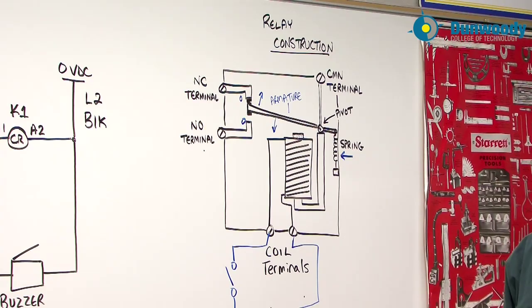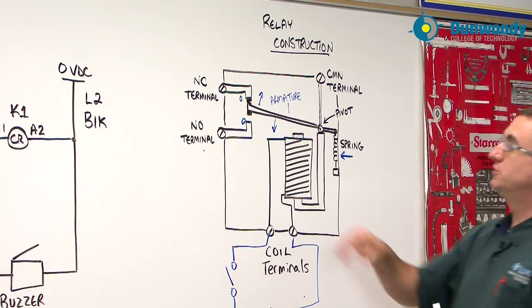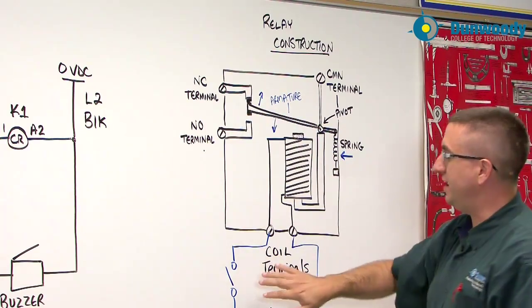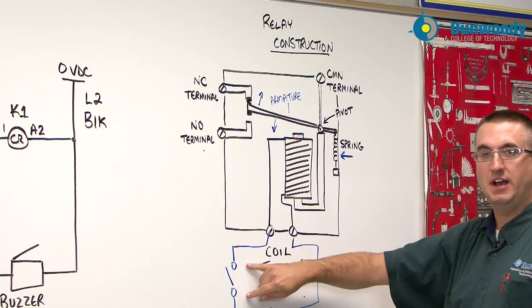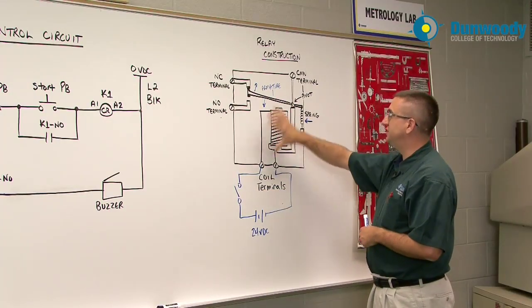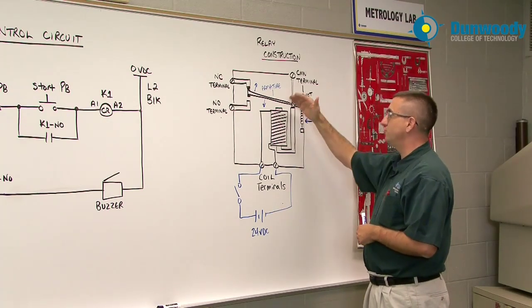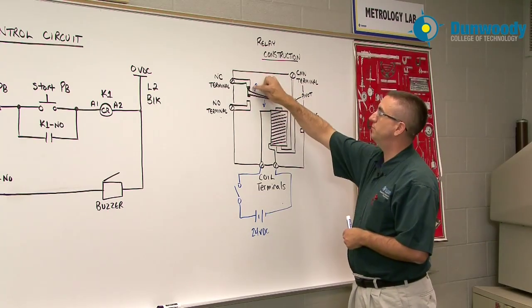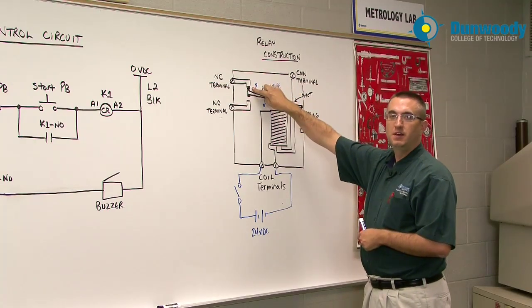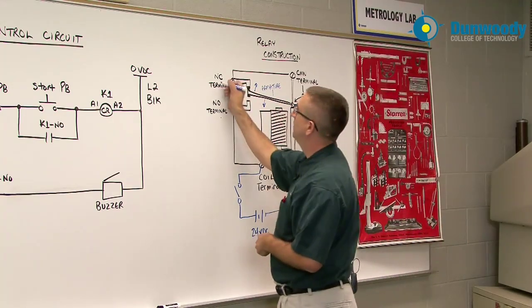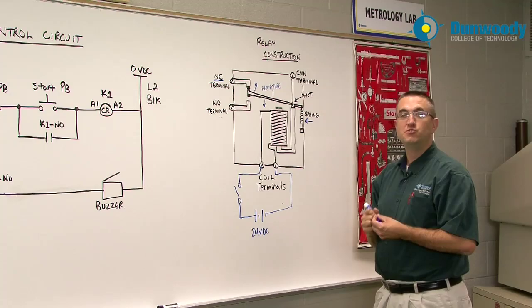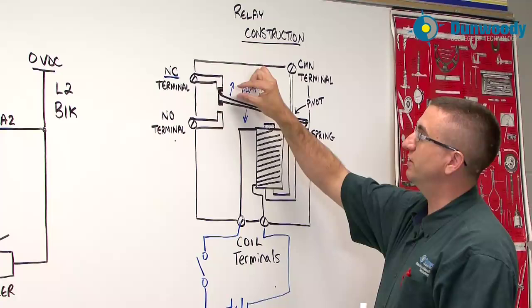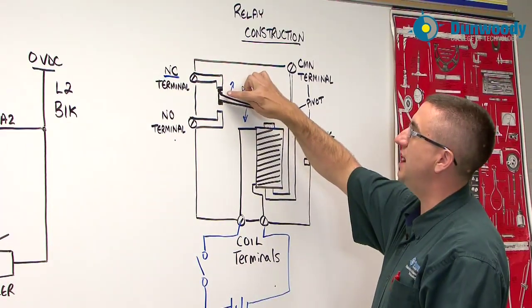These are what we call our normally open and normally closed contacts. So as I look at this drawing here, what I can see is right now my coil is de-energized. So the switch is off, the coil is de-energized, the spring is pulling on this. There's no magnetism to pull on the armature. And what happens is this armature flies up to the normally closed contact. And what normally closed means, this NC stands for normally closed. It means that it's normally closed without power on the coil. So in this particular example the armature is sitting on the normally closed contact.